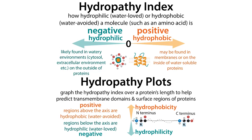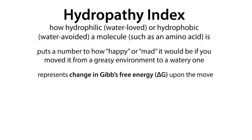Rather than just plotting each individual hydropathy index for each amino acid, which gives a really noisy plot, we want to average out some of the features using a sliding window going across the length of the protein. We'll get more into both the theory and how you can make and interpret hydropathy plots for various proteins. But first, let's address the whole negative-positive thing for the hydropathy index, because I always found that really confusing.